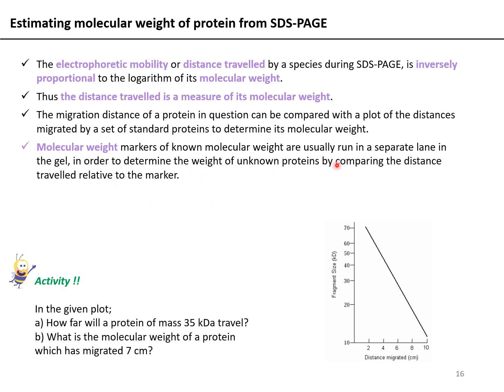Molecular weight markers are always run in a separate lane in the gel to help with this determination. A fun activity: using the provided plot, determine the distance traveled by a protein of mass 35 kilodaltons, and determine the molecular weight of a protein which has migrated 7 centimeters. This exercise gives you an idea of how we plot distance migrated versus log molecular weight and how to identify the molecular weight of a band from your gel.